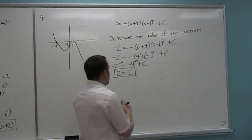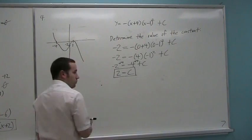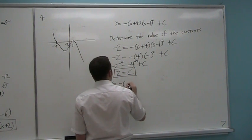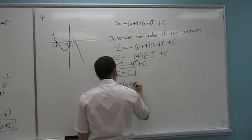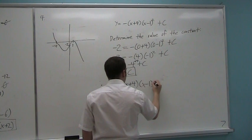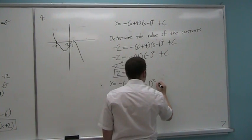Okay. So then I can say, therefore, my true equation here is y equals negative x plus four times x minus one squared. And the c is a two. So I put that on the end.